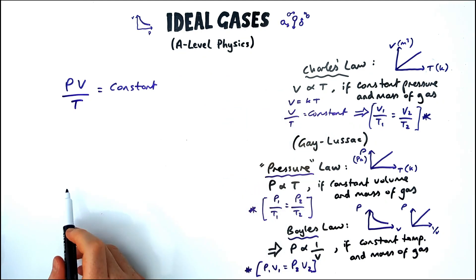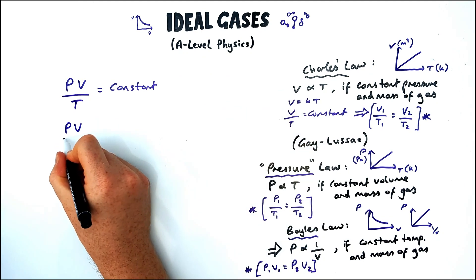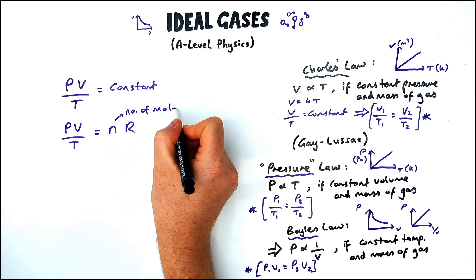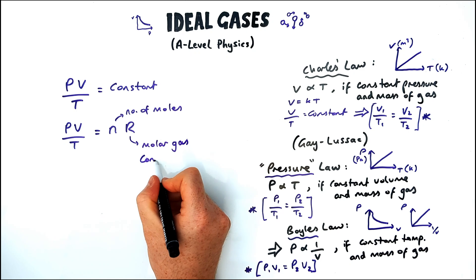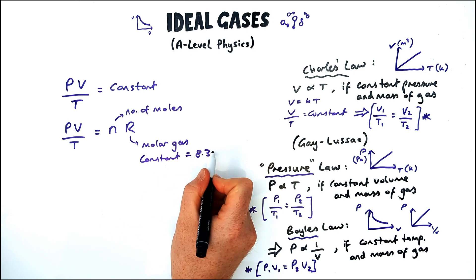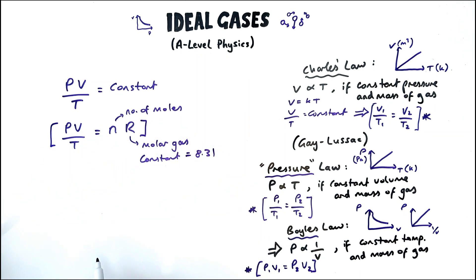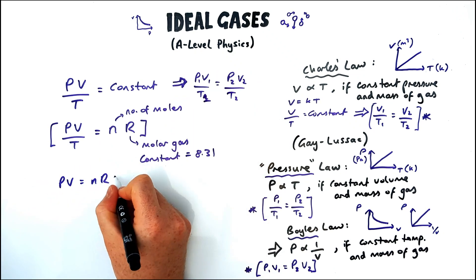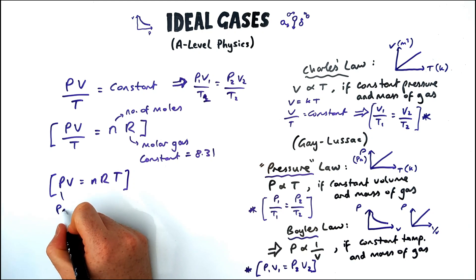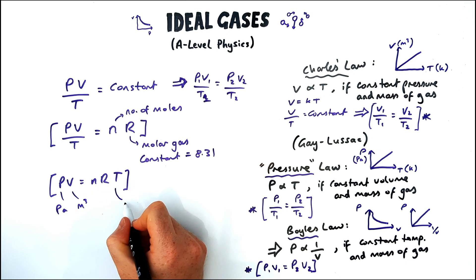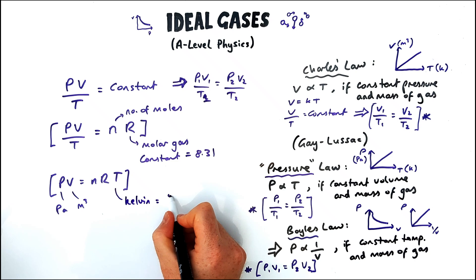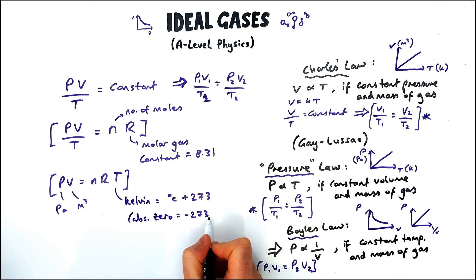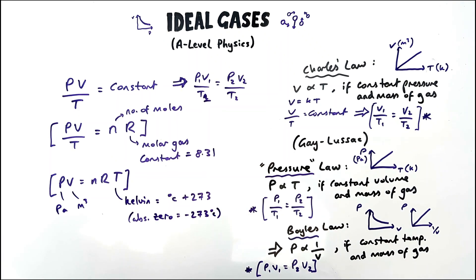PV/T equals n (the number of moles of the gas) multiplied by the molar gas constant R, which is 8.31. This equation is usually rewritten as PV = nRT. This equation only works if pressure is in pascals, volume is in metres cubed, number of moles is in moles, and temperature is in Kelvin — so add 273 if it's given in degrees Celsius, because absolute zero is minus 273.